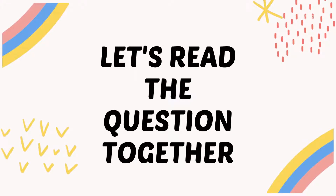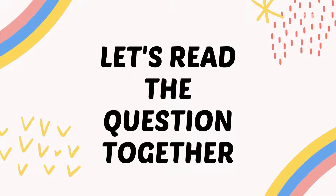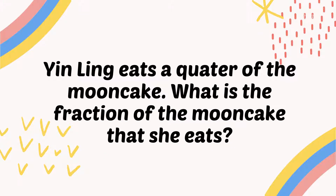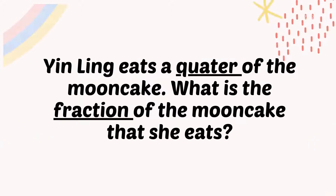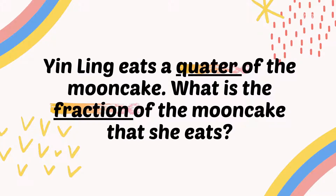Now let's read the third example. Yin Ling eats a quarter of the moon cake. What is the fraction of the moon cake that she eats? Now we're going to find the clues. The clues are the word 'quarter' and the word 'fraction'.